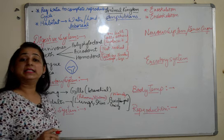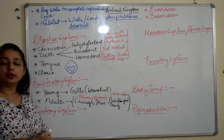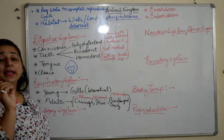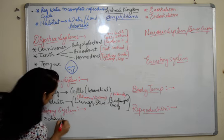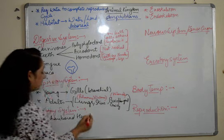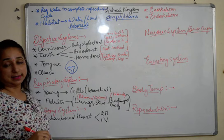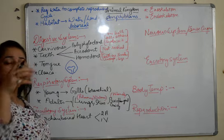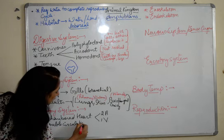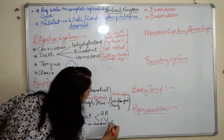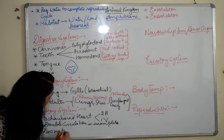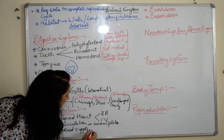Moving on to the circulatory system. The main important feature is that the heart is three-chambered — two auricles and one ventricle. In this type of heart, double circulation is incomplete, and deoxygenated blood is supplied to the body.